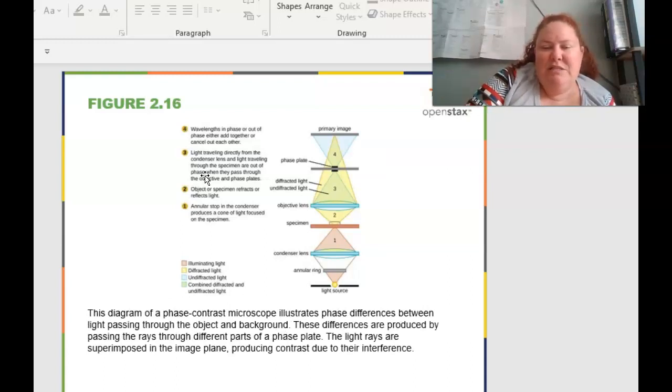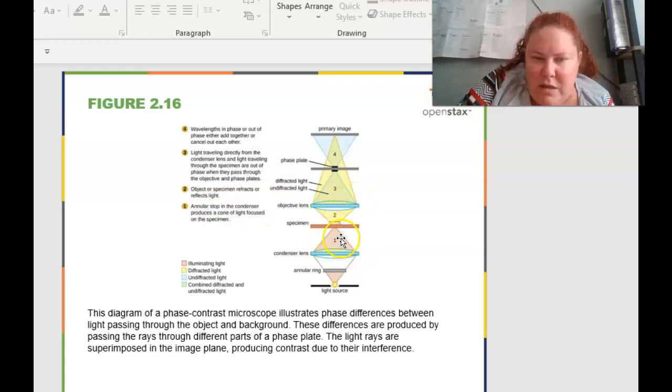Normally we're used to seeing the cells themselves stained in dark field or dark versus a light background, but in dark field, it's flip-flopped. This diagram of a phase contrast microscope illustrates the phase differences between light passing through the object in the background. And these differences are produced by passing the rays through different parts of the phase plate. The light rays are superimposed with the image plane producing contrast due to the interference.